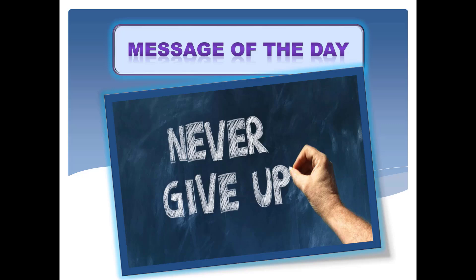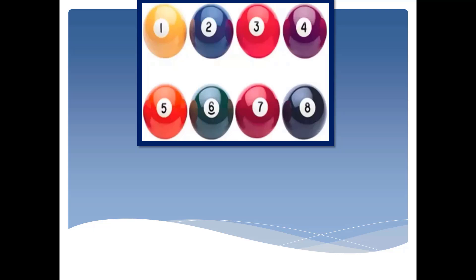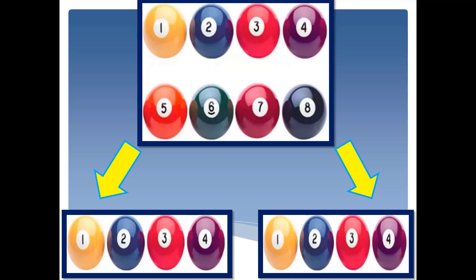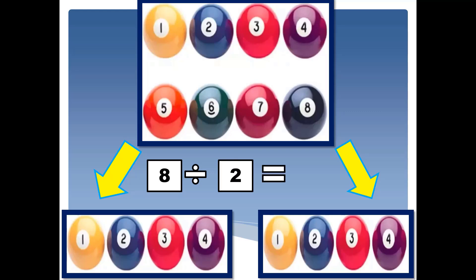Now look at this, Class 2۔ یہ کیا ہے؟ Yes, these are balls. And how many balls are present? Yes, these are 8 balls۔ میں چاہتی ہوں کہ ان 8 balls کو 2 students میں equally divide کر دوں — کہ ہر student کو equal number of balls ملے۔ Yes! میں 8 balls کو 2 students میں equally divide کر سکتی ہوں اور ہر student کو 4 balls ملیں گی۔